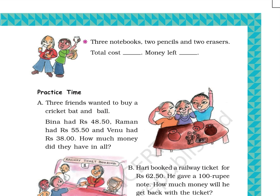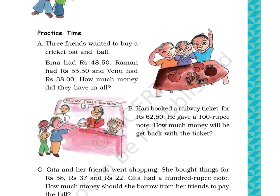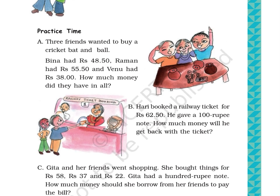Practice Time. Question A: Three friends wanted to buy a cricket bat and ball. Beena had Rs. 48.50, Raman had Rs. 55.50, and Venu had Rs. 38. How much money did they have in all? The picture at the right side shows two boys and a girl sitting at one side of a table with their gullaks (piggy banks) and some money on the table.